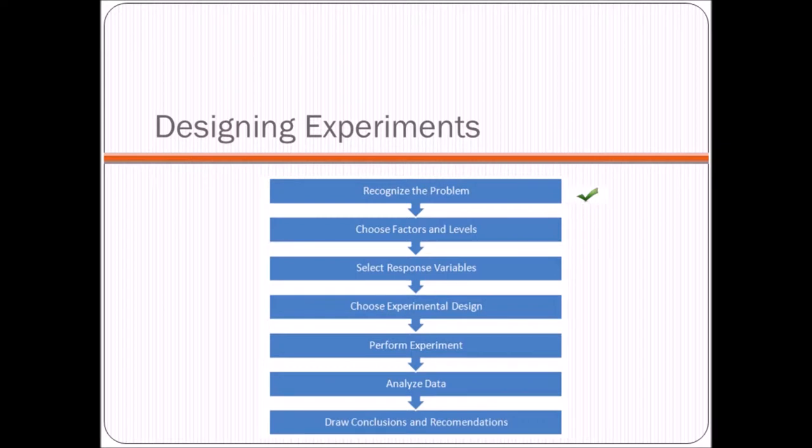So in order to perform our experiment, we follow the seven steps of designing experiments. The first one recognizes the problem. We've already done that. We know that we want to figure out the settings on a 3D printer that make the strongest ABS plastic part. So what's next? Choose the factors and levels. We'll spend just a minute discussing that.